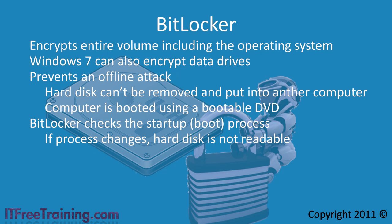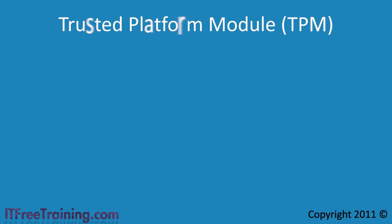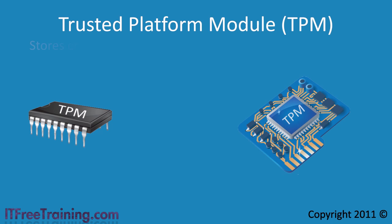It is also recommended that you use BitLocker with Trusted Platform Module, or TPM. A TPM is a chip on the motherboard. BitLocker uses this chip to hold the encryption keys and check the boot up sequence. If the startup sequence is correct, the TPM chip will allow the hard disk to be unencrypted.